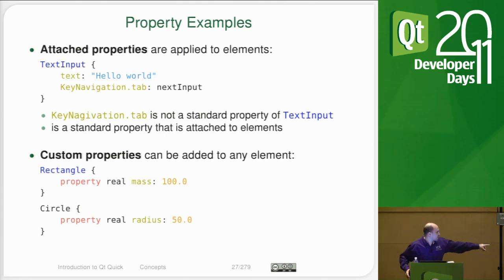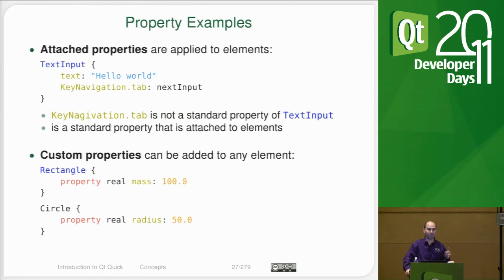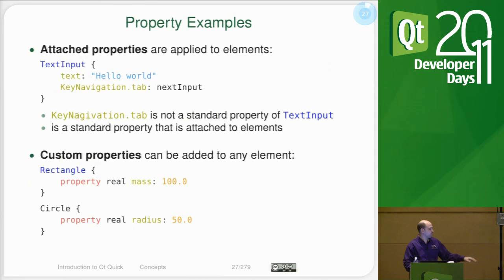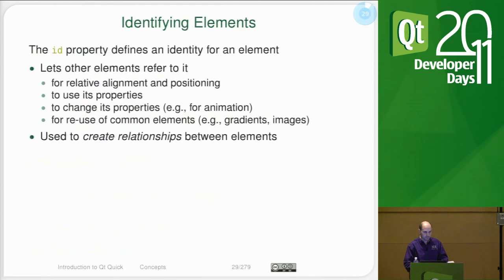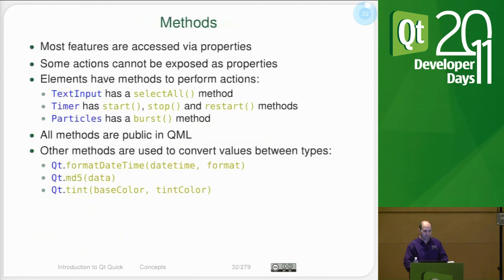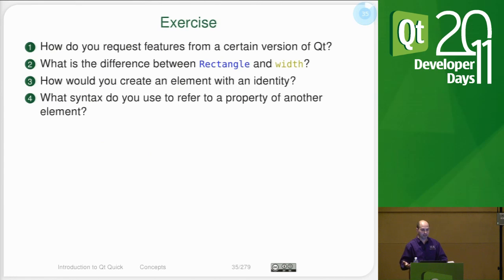So we have this property real mass. There's an automatic signal we can catch called onMassChanged — actually the signal is called massChanged. We're going to find out that there are also automatic slots we get, such as onMassChanged. Inside of onMassChanged, it is called after the value actually changes. So this property basically is a getter, a setter, and a signal. And you can let bindings take care of it for you, or you can subscribe to them yourself.